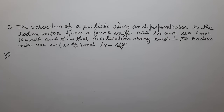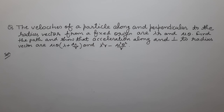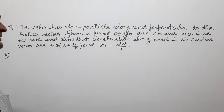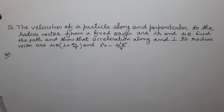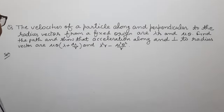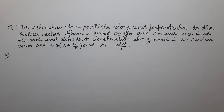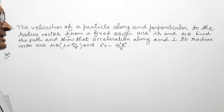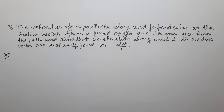Hello friends. Here it is given that the velocities of a particle along and perpendicular to the radius vector from a fixed origin are λr and μθ. Find the path and show that acceleration along and perpendicular to the radius vector are μθ(λ + μ)/r and λ²r − μ²θ²/r respectively.